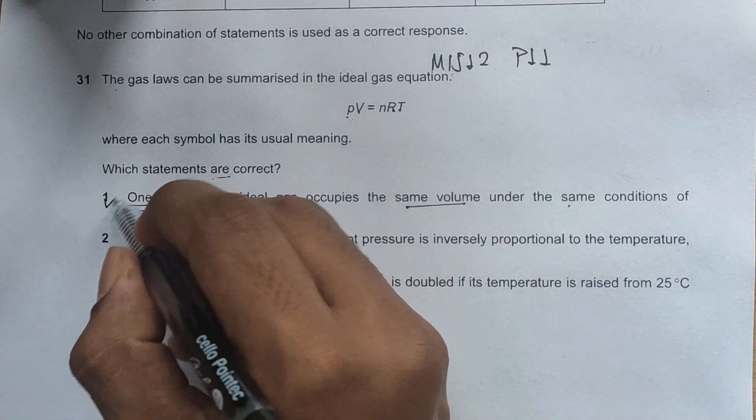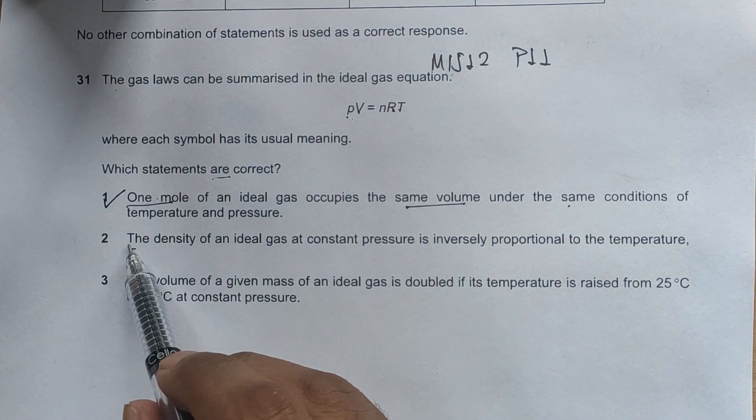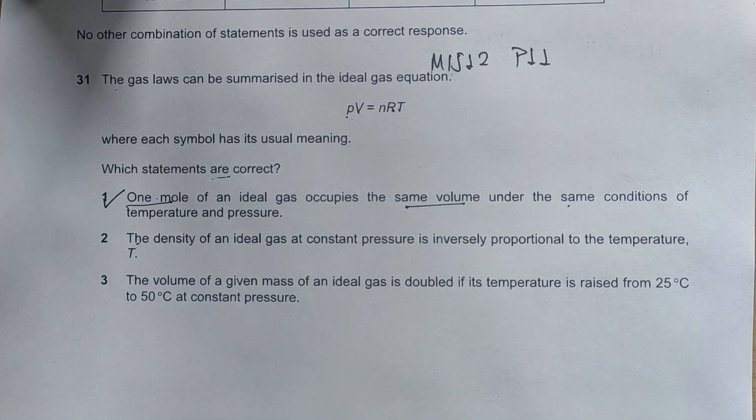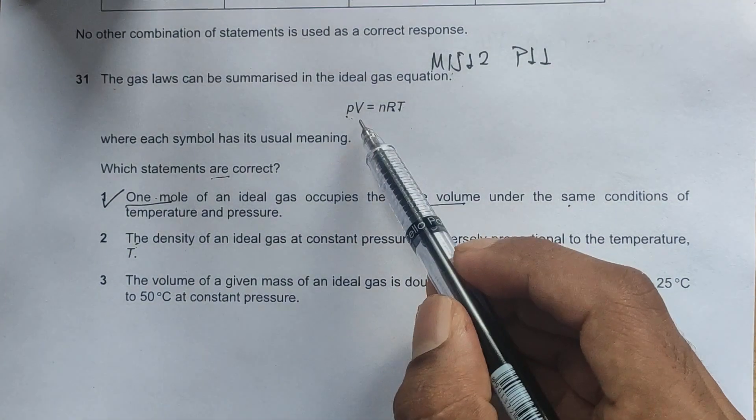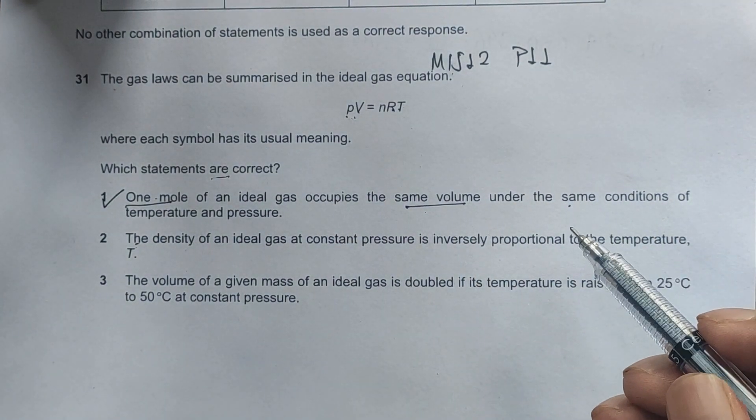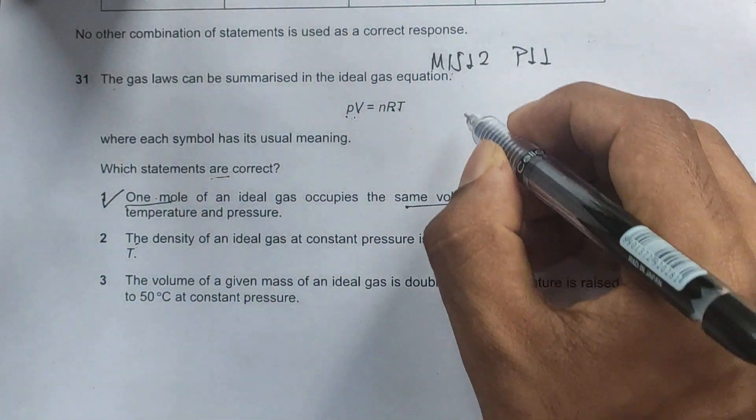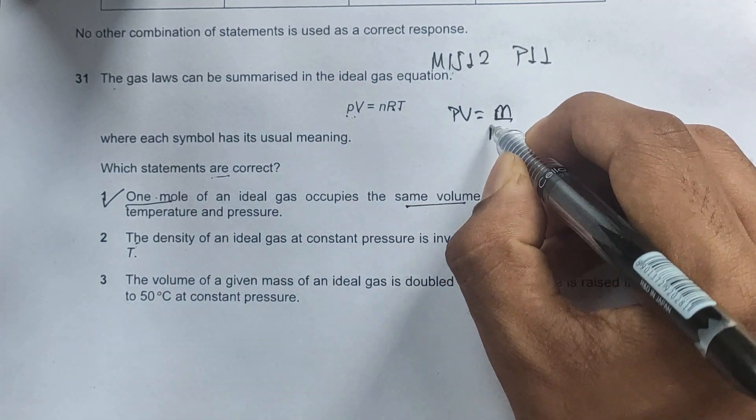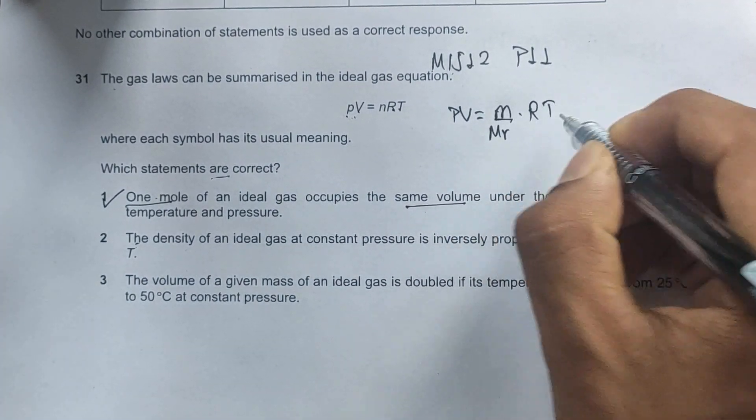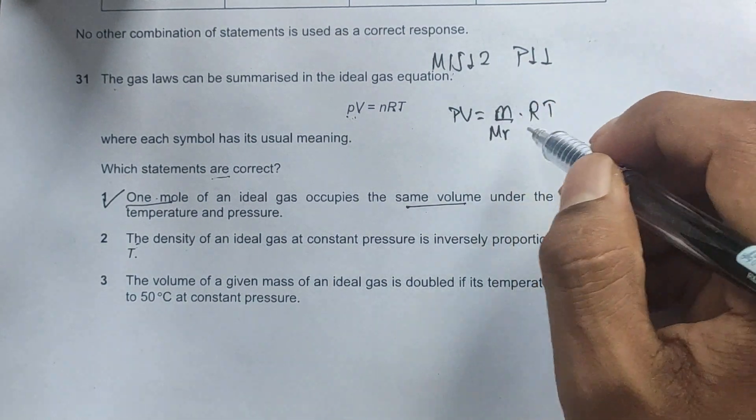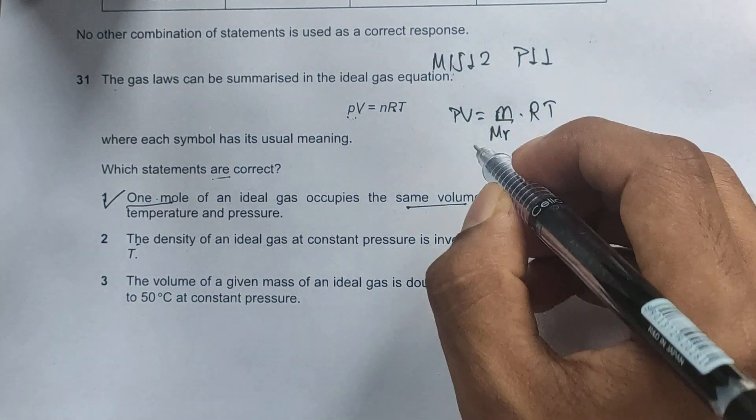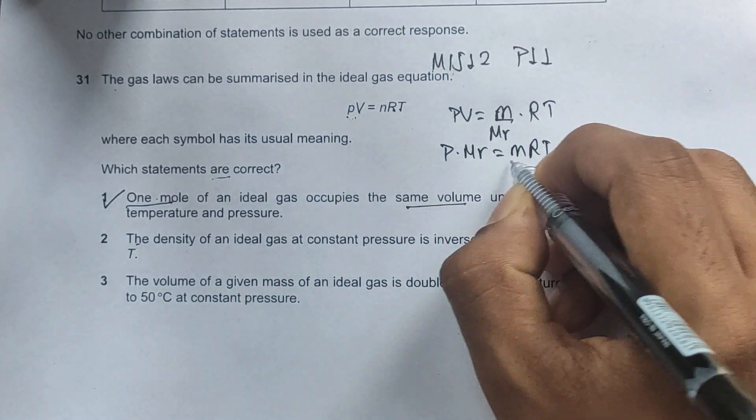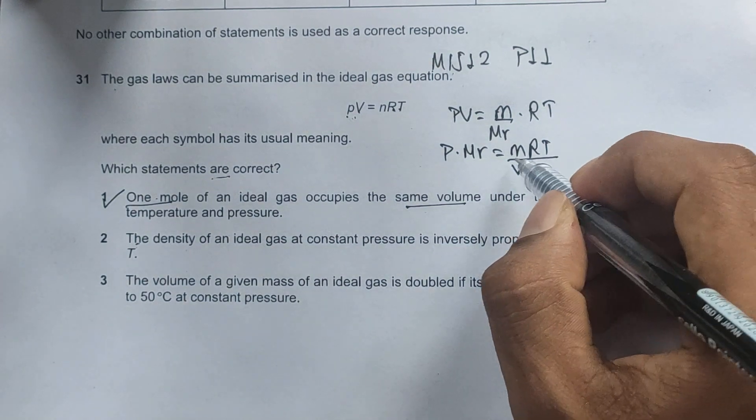Now option two: The density of an ideal gas at constant pressure is inversely proportional to the temperature. We need to manipulate this equation so that we have density as one variable. Writing this equation in another term, we'll have PV equals n, which means m divided by Mr, multiplied by RT. If we multiply by Mr on both sides and divide by volume on both sides, we'll have P times Mr equals m times RT divided by V.